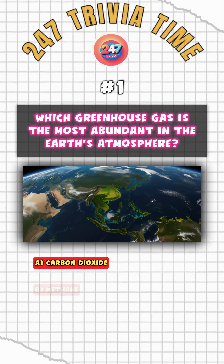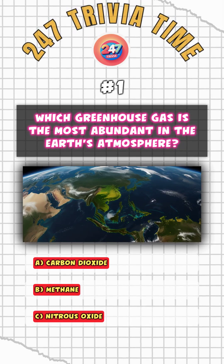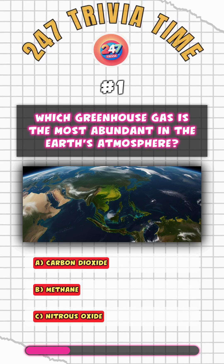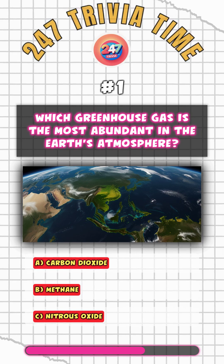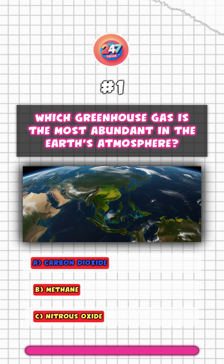Which greenhouse gas is the most abundant in the Earth's atmosphere? A. Carbon dioxide.